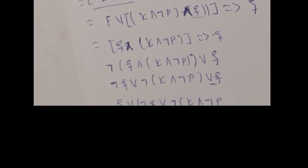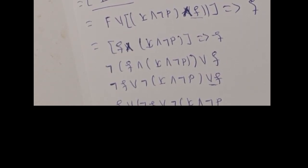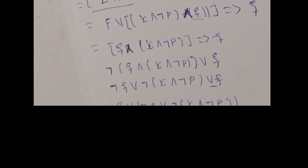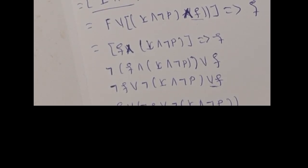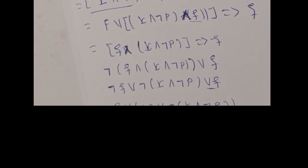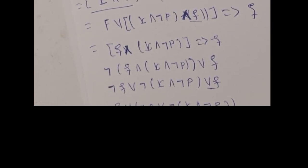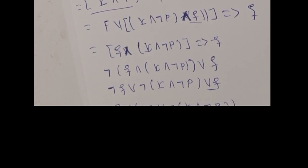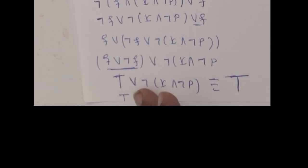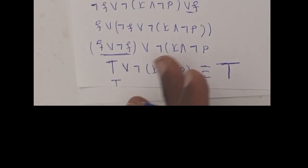So, Q and negation Q implies negation R and negation P. True, or true, or negation R and negation P — which is always true. So it is a tautology.